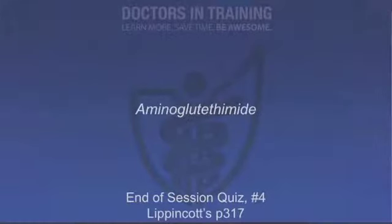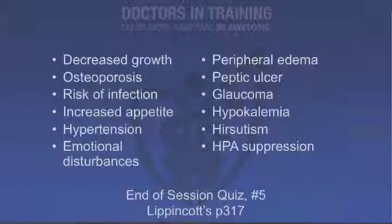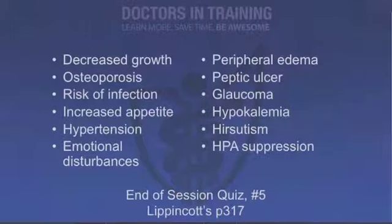How are corticosteroids excreted? They are metabolized by the liver, metabolites are conjugated with glucuronic acid or sulfate, and excreted by the kidney. Match inhibitors of adrenocorticoid biosynthesis: a 60-year-old with heart failure — eplerenone. A 50-year-old woman with a tumor of her adrenal cortex — aminoglutethimide. A 36-year-old pregnant woman with Cushing's syndrome — metyrapone. A 41-year-old man with inoperable ectopic ACTH syndrome — mifepristone. Side effects of long-term glucocorticoid therapy include: decreased growth in children, osteoporosis, increased risk of infection, increased appetite, hypertension, emotional disturbances, peripheral edema, peptic ulcer, glaucoma, hypokalemia, hirsutism, and HPA suppression.